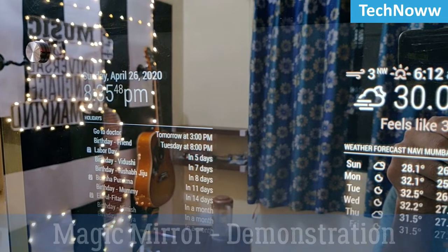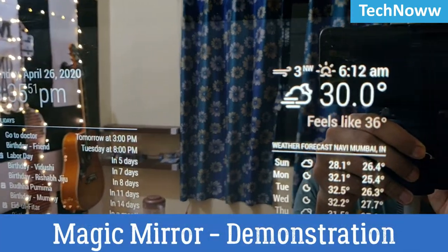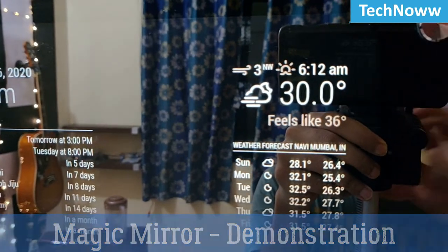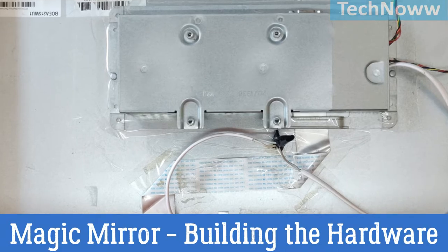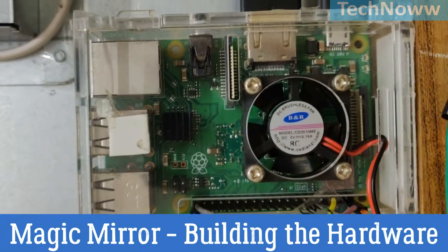My earlier video was a demonstration of magic mirror whereas this video is a tutorial about how to build the hardware portion of magic mirror, that is assembling the mirror glass, frame, monitor screen and Raspberry Pi.